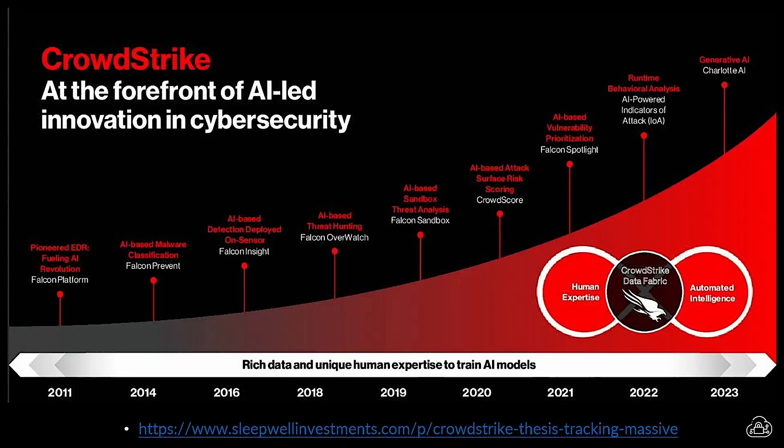CrowdStrike started in 2011 as a threat intelligence technology company. They provided threat intelligence for customers, then started doing incident response activities, and then moved into endpoint security with Falcon Prevent. That's when they started utilizing machine learning to identify tactics, techniques, and procedures around what attackers have been doing — the advent of what we now know as the EDR market.